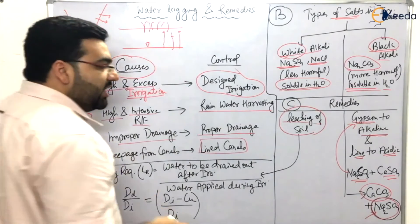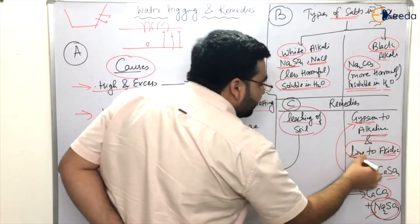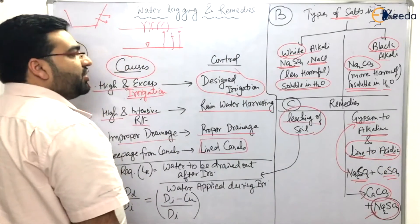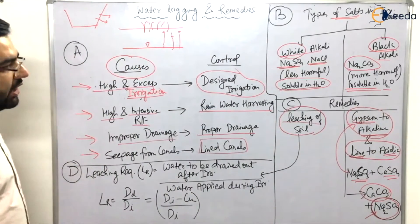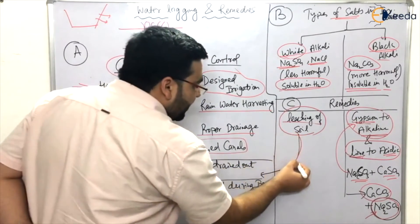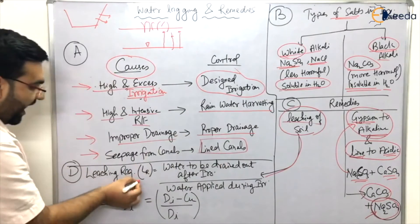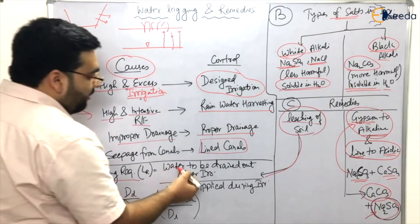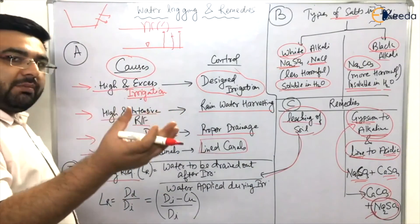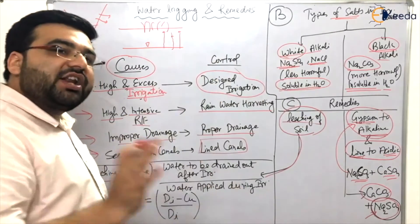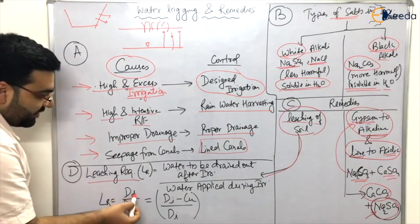This question has also been asked in examinations: lime is used for reclamation of acid soils and gypsum is used for alkaline soils. Now regarding leaching: the leaching requirement is denoted by the ratio of water to be drained out after irrigation divided by the water applied during irrigation.